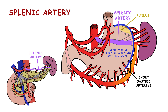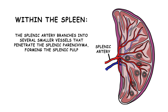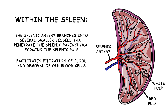Additionally, the splenic artery provides blood supply to the pancreas through various pancreatic branches. It also gives rise to numerous branches that supply the spleen. Within the spleen, the splenic artery branches into several smaller vessels that penetrate the splenic parenchyma, forming the splenic pulp. This network of vessels facilitates the filtration of blood and the removal of old or damaged blood cells by the spleen.